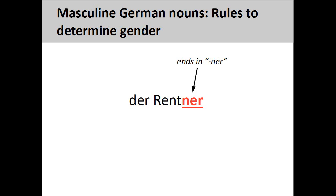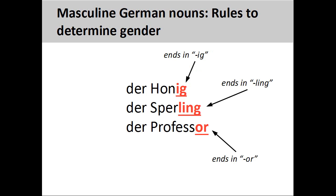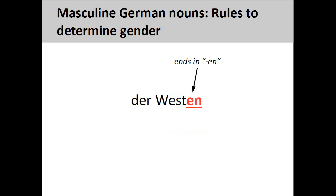Nouns ending in '-ner', such as 'Rentner' (pensioner), are masculine. We'll see a way to form a feminine version of these nouns in a later presentation. Nouns ending in '-ig', '-ling', and '-or', such as 'Honig' (honey), 'Sperling' (sparrow), and 'Professor' (professor), are masculine. Finally, most nouns ending in '-en', such as 'Westen' (the west), are masculine.